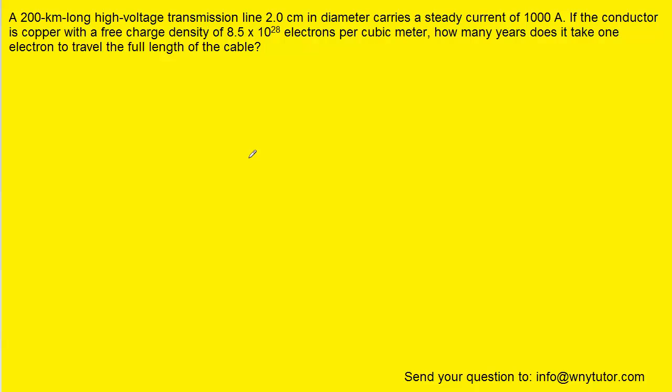To begin answering this question, we want to look at the relationship between current, charge carriers, drift speed, and the cross-sectional area of the wire. And here is that relationship.